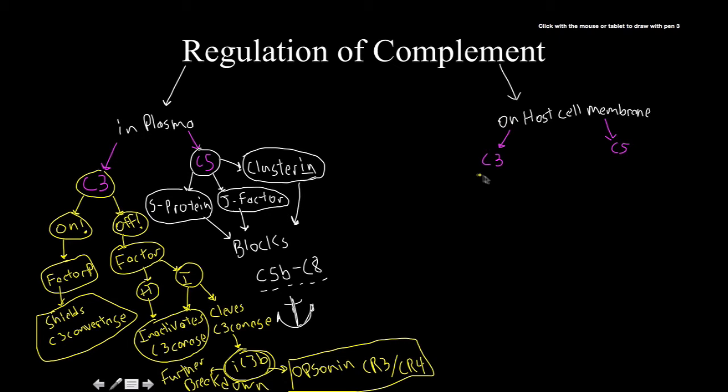Now on the host cell membranes, for C3 regulation, I'm going to keep my color coordination that I've got going on here. For C3, we have two, I guess, components known as decay accelerating factor, because it accelerates the decay of C3 convertase, and then membrane cofactor protein. I'm not going to write those out, but I just said them, so write it down.